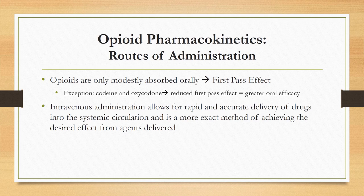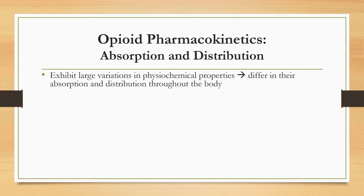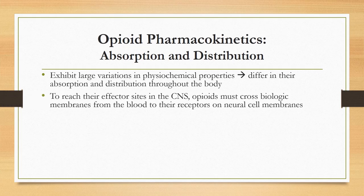The availability of short-, medium-, and long-acting opioids and the many routes of administration give anesthesia providers considerable flexibility. In this lecture we will focus primarily on intravenous opioids. Opioids exhibit large variations in physiochemical properties that influence their pharmacokinetics and differ in absorption and distribution. To reach effector sites in the central nervous system, opioids must cross biologic membranes from the blood to receptors on neural cell membranes.